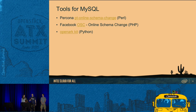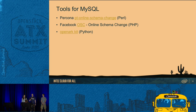We don't have to do this by hand — we can use existing tools. The first is Percona's pt-online-schema-change. The second is the online schema change from Facebook. There is also a suite of tools called OpenArchKit, written in Python. Unfortunately, the last two aren't developed anymore — they haven't been updated for about four years. Percona's tool is still under heavy development.